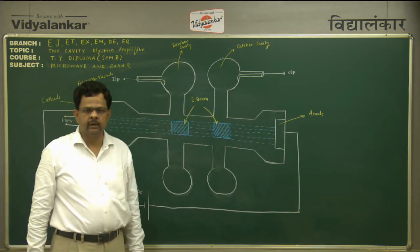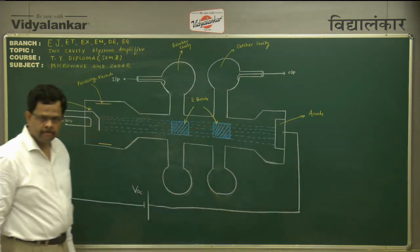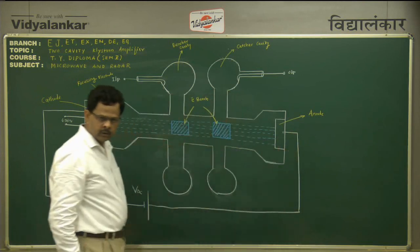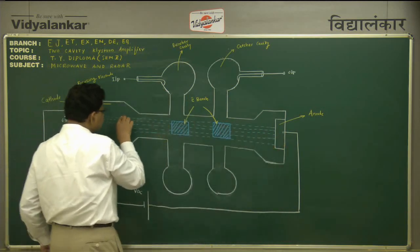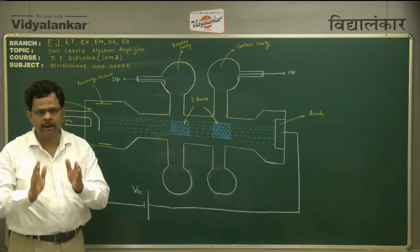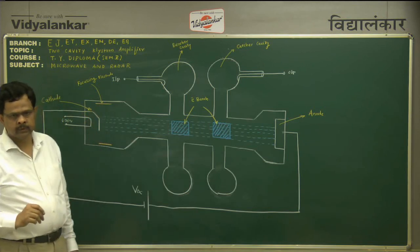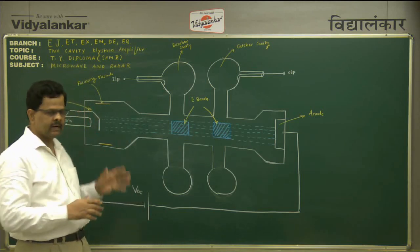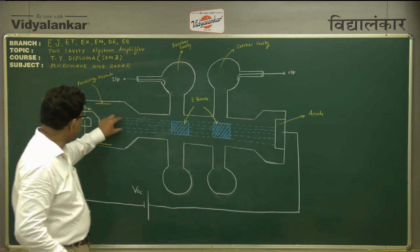Let us study how this two-cavity klystron amplifier amplifies the microwave frequency signal. The cathode generates a large number of electrons, and the high positive voltage applied to the anode attracts these electrons, forming an electron beam between the anode and cathode. We need this electron beam to be sharp, so we use a focusing electrode and apply an external DC voltage to it to achieve a sharp electron beam.